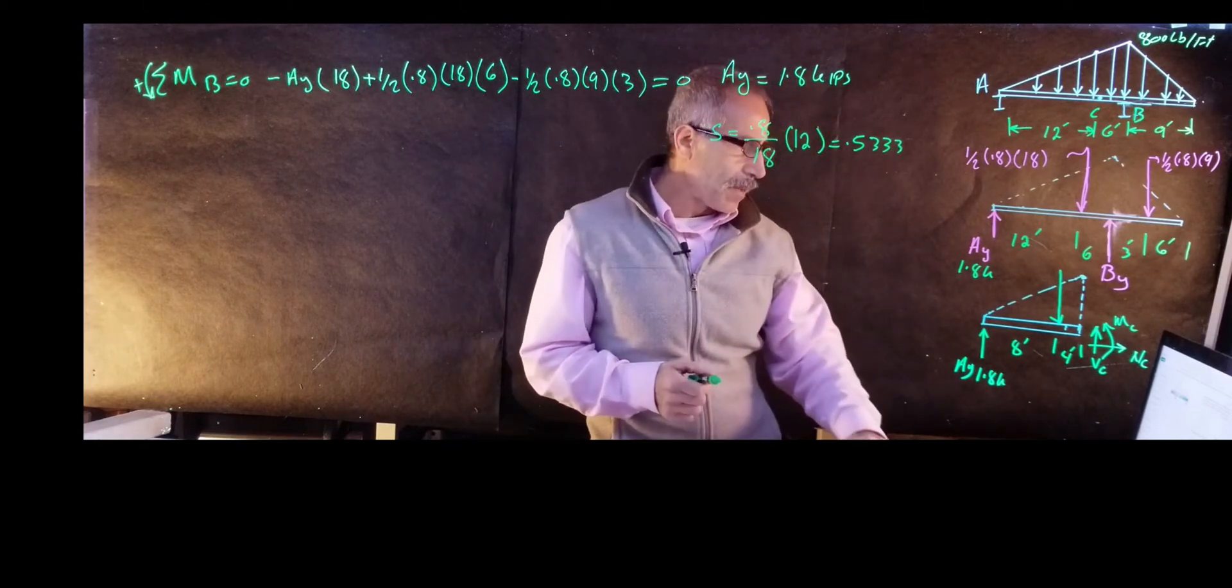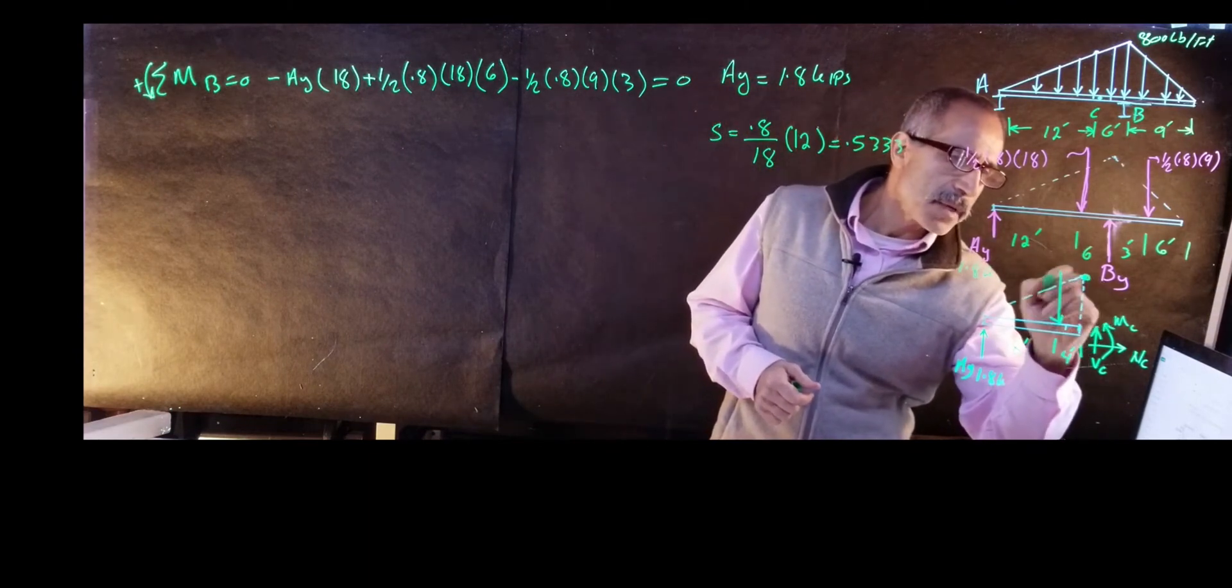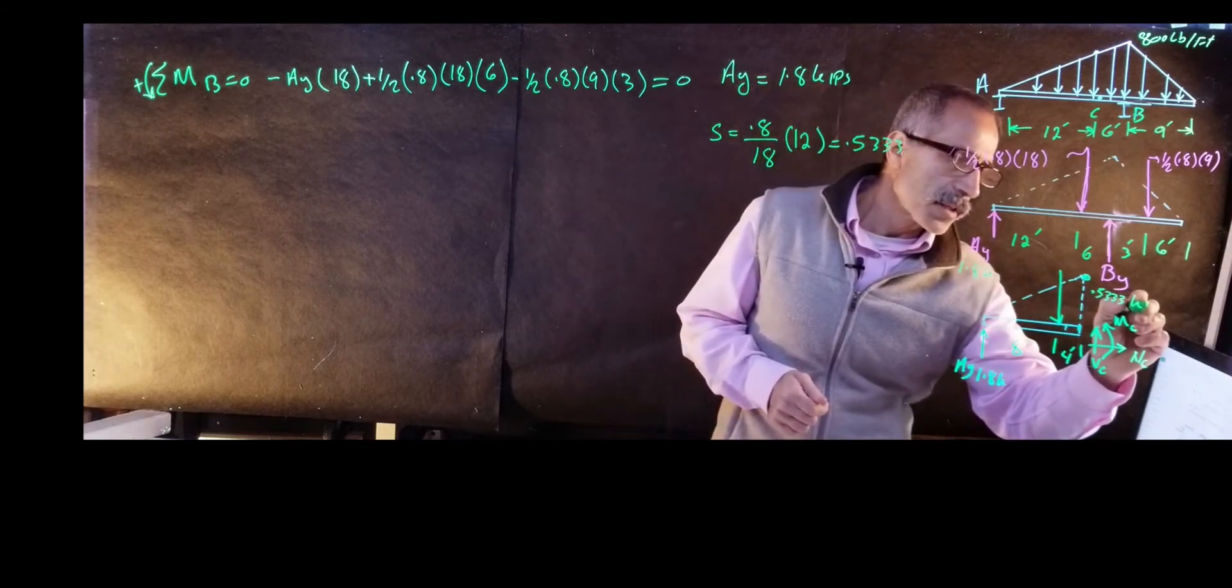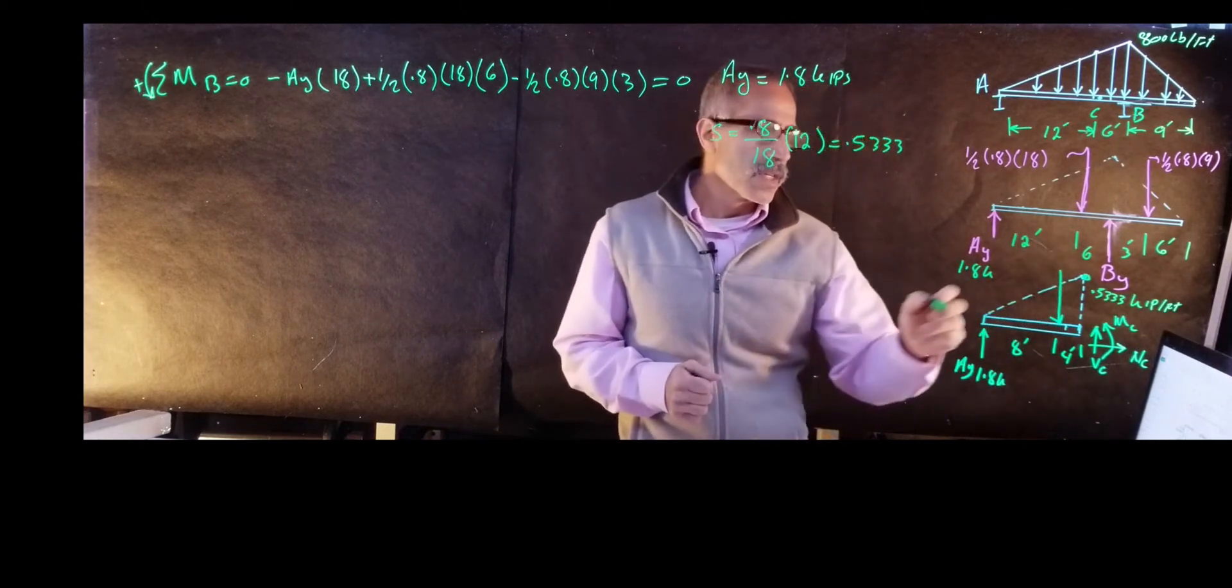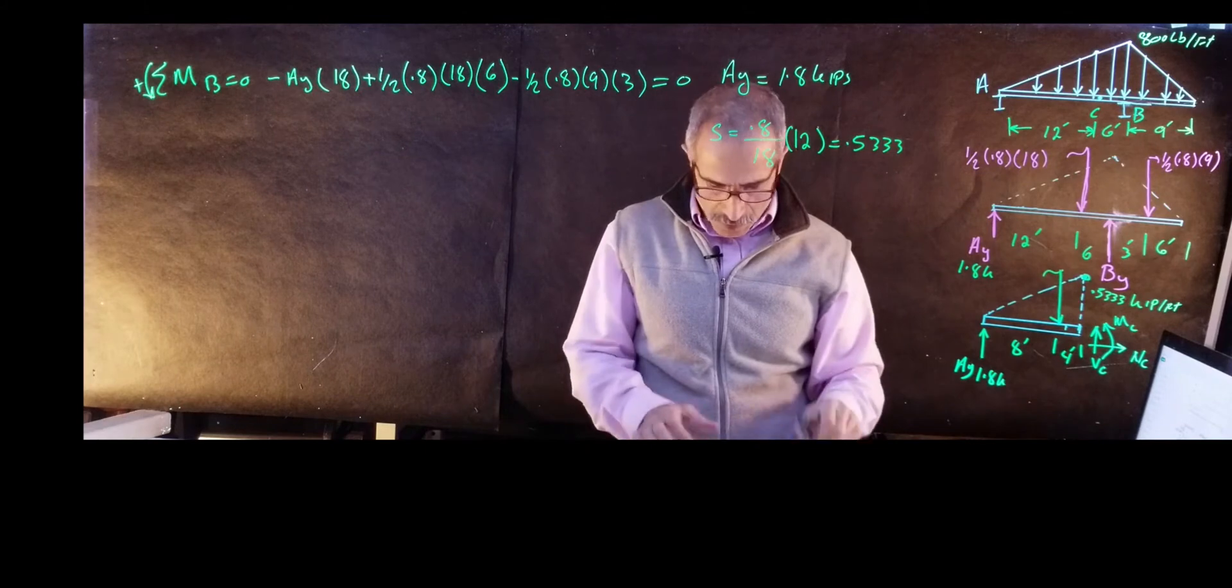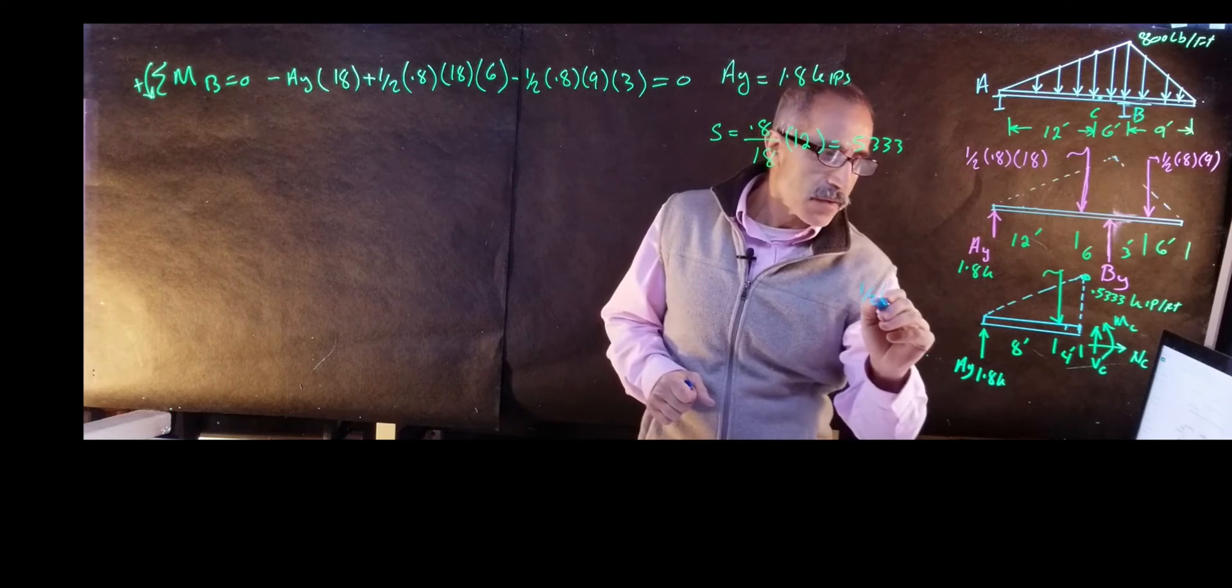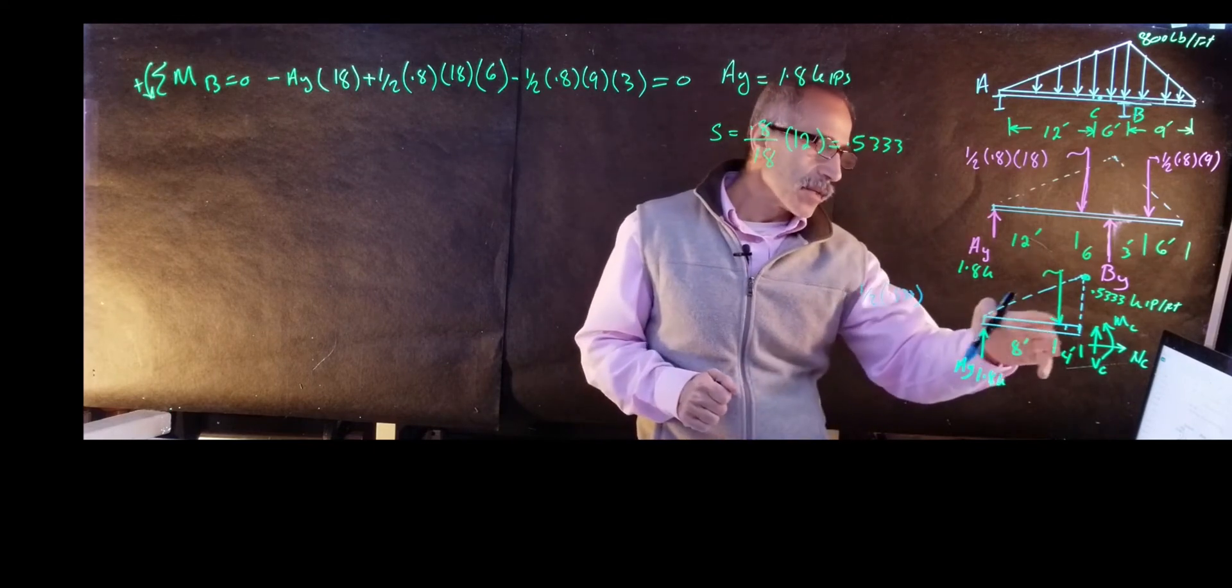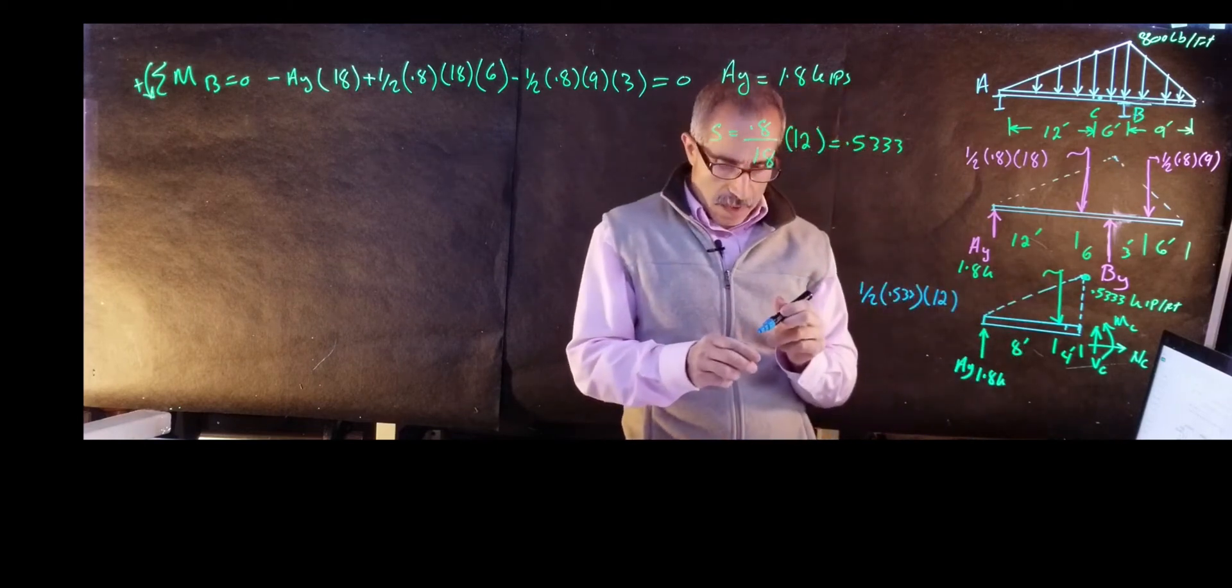So we know the magnitude of this right here, this point here, this magnitude is 0.5333, and that's a kip per foot. Now I want to know what the magnitude of this concentrated load is. This concentrated load is going to come out to one half of 0.5333 times the distance, which is 12. So that's the magnitude of this concentrated load.